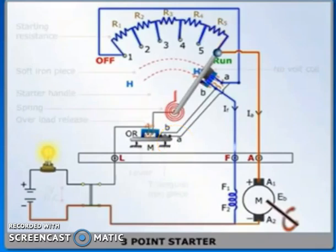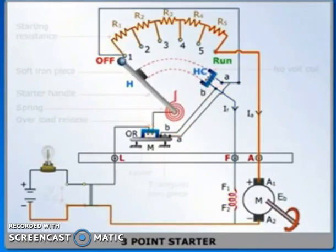As the soft iron arm is attracted, terminals A and B of the no-volt release HC get short-circuited. In this manner, HC gets demagnetized and the starter arm H is pulled back to the OFF position by the spiral spring. The motor is thus automatically disconnected from the supply in case of overload.